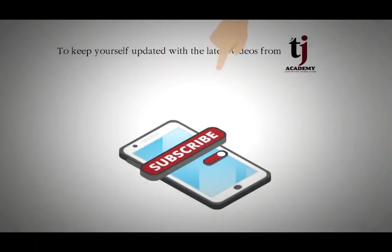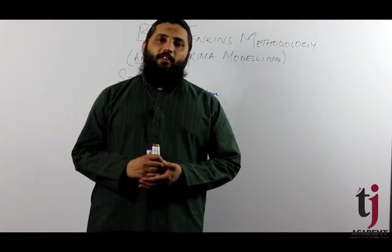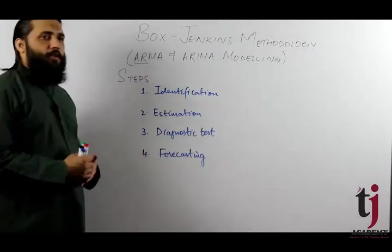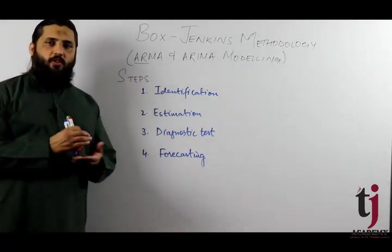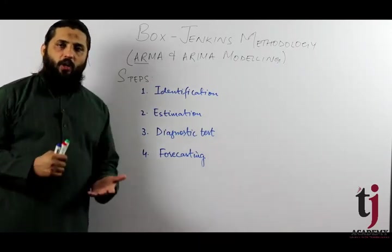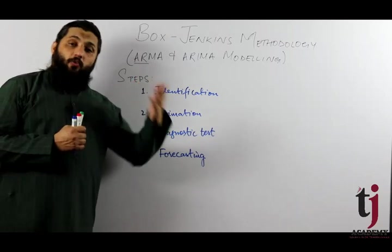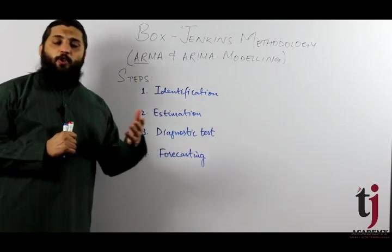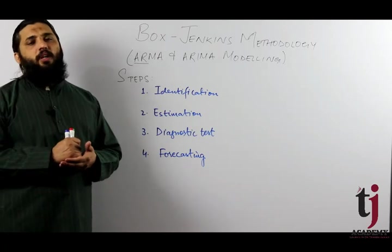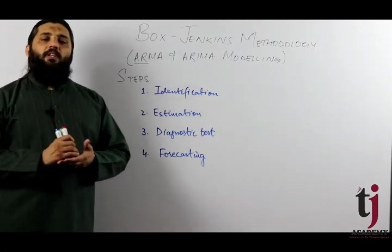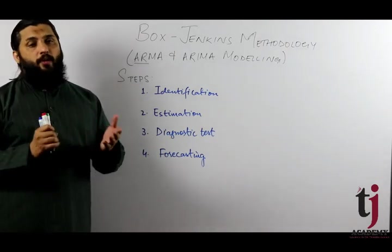Subscribe to TJ Academy to stay updated. Today we discussed the last lecture about Box-Jenkins assumptions and some terms: what is an auto-regressive model, what is a moving average model. We also discussed the methodology which states that a variable should be stationary. If the variable is stationary, you have to use the ARMA model.